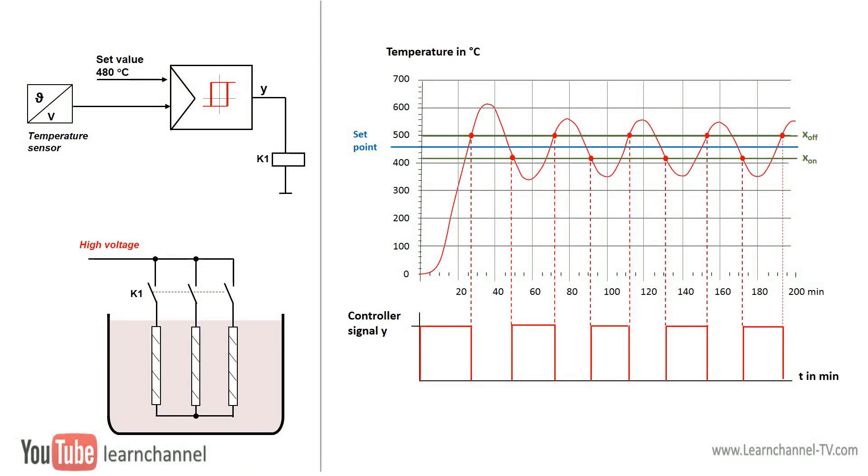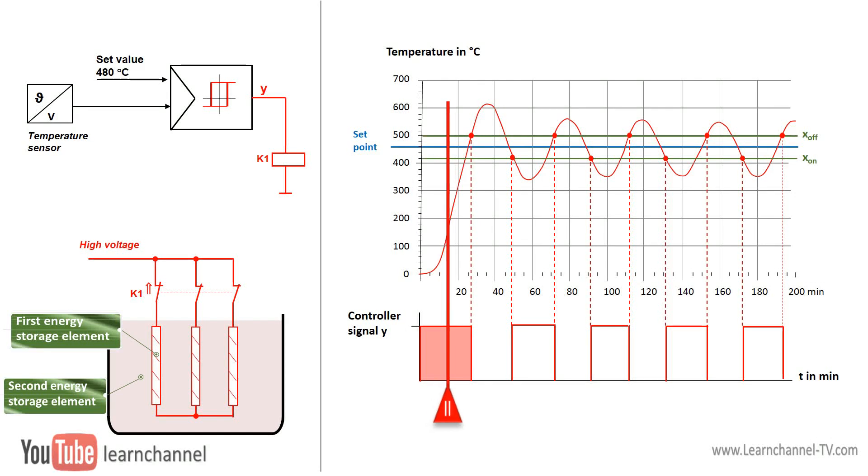The control characteristics look completely different with a controlled system consisting of more than one energy storage element. In our example, we have a tin bath. Here, the heating rods represents the first energy storage, the tin itself the second energy storage element. The curve of the controlled variable, here the temperature of the tin, now shows overshoots, as these controlled systems with multiple energy storage elements react delayed to a control signal. That is why they are more difficult to control.